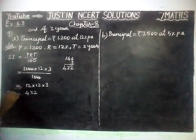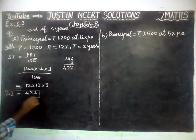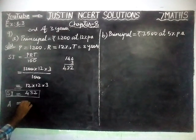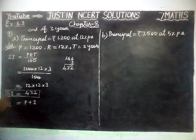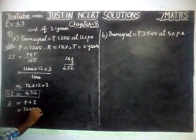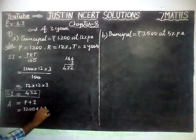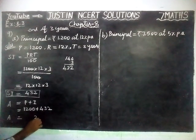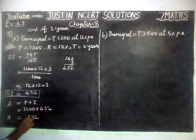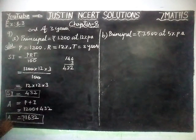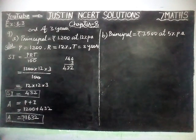So Simple Interest is equal to 432. Now we have to find the Amount. A is equal to P plus I. Principal Amount is equal to 1200 plus Interest is equal to 432. Therefore Amount is equal to 1632. After 3 years, the amount to be paid is Rs. 1632.